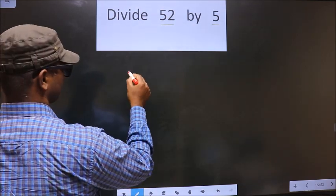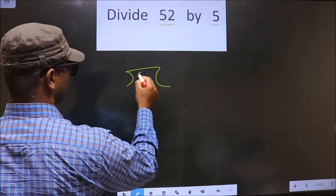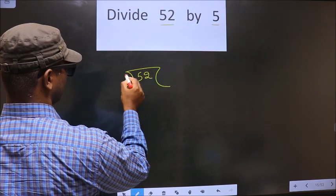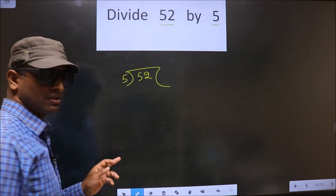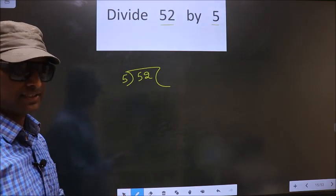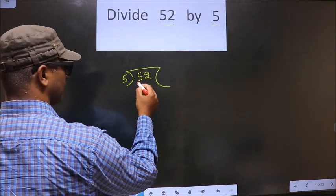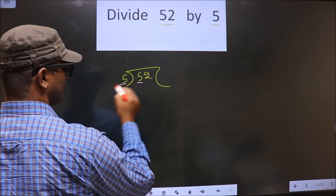That is 52, 5. Okay, next. Now here we have 5. Here also we have 5.